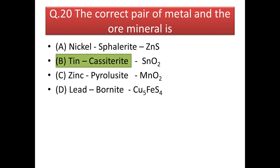Next question: the correct pair of metal and its ore mineral is? Sphalerite is a sulfide of zinc — ZnS. Cassiterite is tin oxide. So that is the correct match: cassiterite is an ore of tin. Pyrolusite is MnO₂, which is not an ore of zinc but of manganese. And bornite, with formula Cu₅FeS₄, is a copper and iron sulfide, not a lead sulfide. The answer is option 2: cassiterite is an ore of tin.